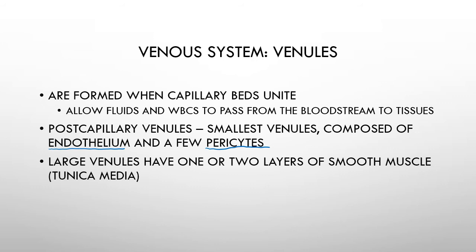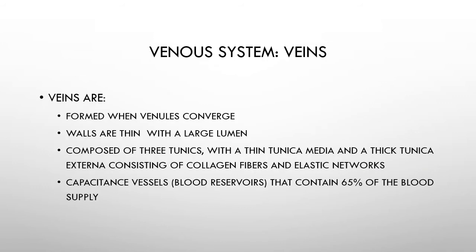As we get into larger venules we start to see a tunica media with more smooth muscle returning. Those veins continue to converge - larger and larger veins coming together - until we eventually reach the superior or inferior vena cava, bringing blood back to the heart. In these larger vessels all three tunics are fully present: tunica media, tunica interna, and tunica externa.